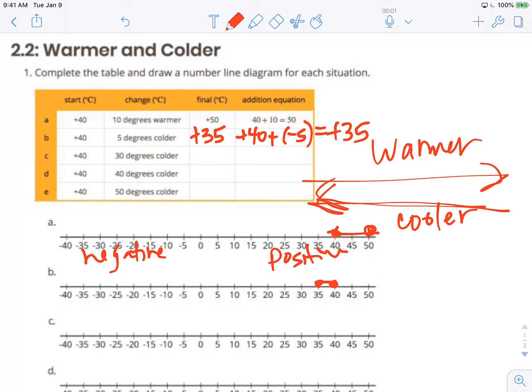For letter C it says start at 40 degrees, positive 40 degrees. So 40 degrees to the right of 0. It's going to get 30 degrees cooler this time so that's 10, 20, 30 degrees cooler. So we end at positive 10. So again we can write that as positive 40 plus a drop in temperature so negative 30 degree change is equal to a positive 10.